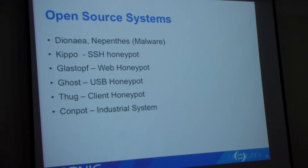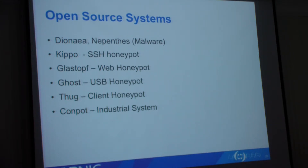So what about medium-interaction honeypots? There are many systems out there that you can try out immediately. The different systems do different things or attract different kinds of attacks. If you are interested in malware-type attacks on the network, two kinds of honeypot are very popular: Dionea and Depentus. Dionea is the one that people tend to install — it is an open-source system, which means you can actually modify and configure it further for your own needs.